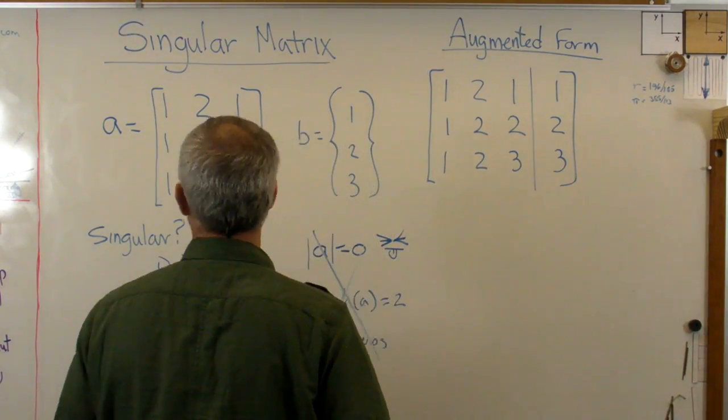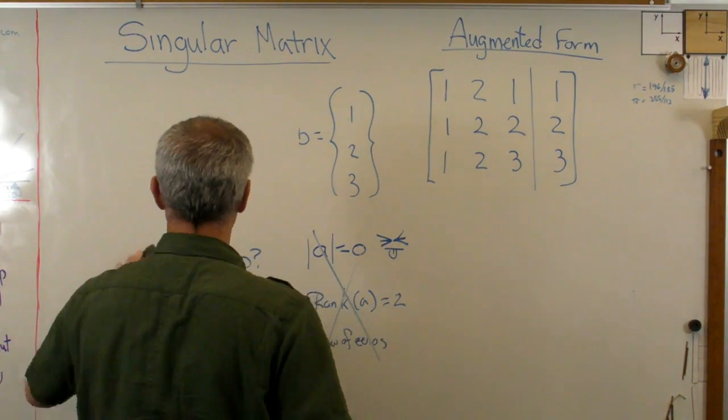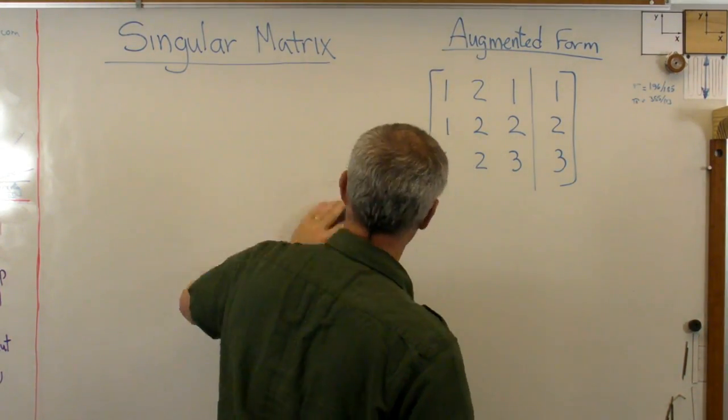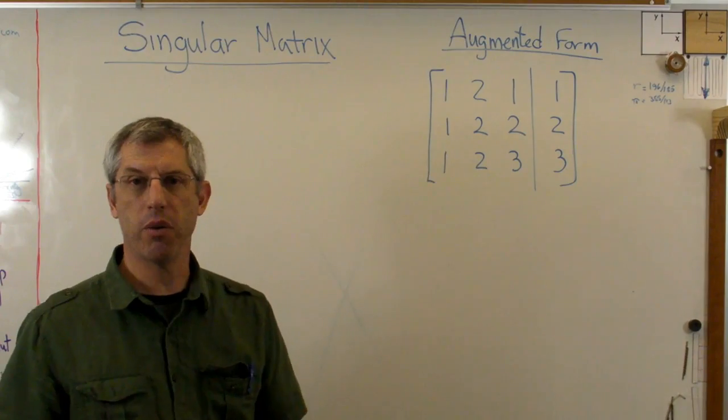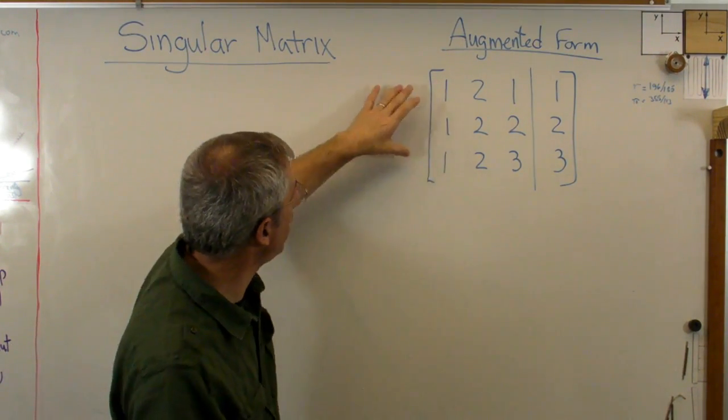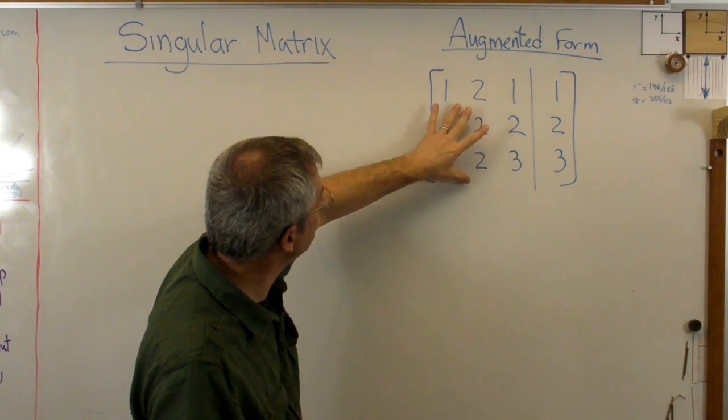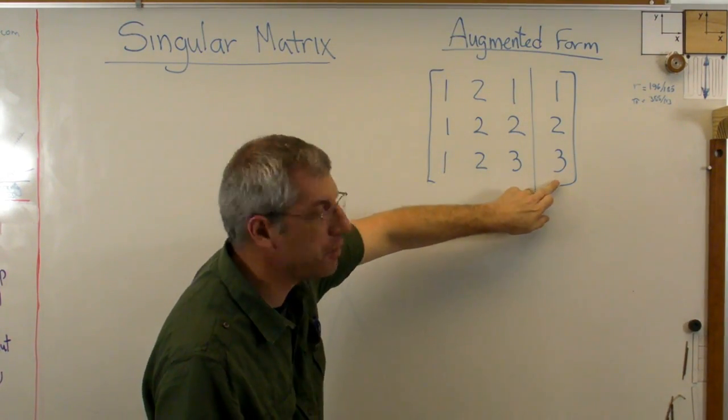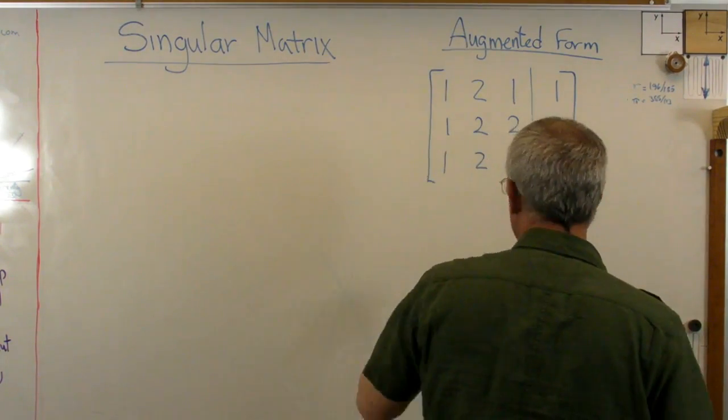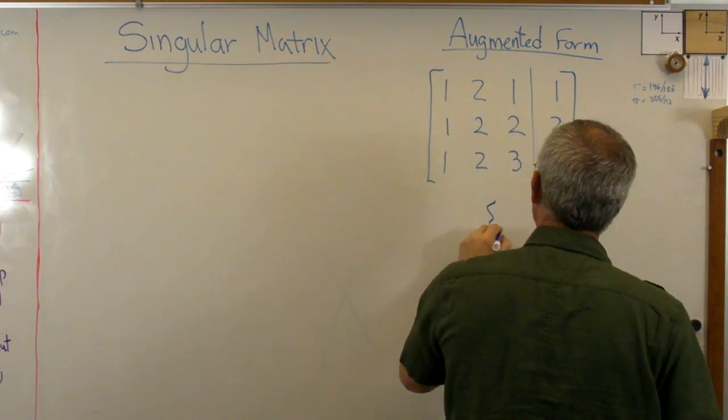And just to show you how this worked out, let me erase some of this stuff here, and I'll show you how it worked out when I did the row operations. When you do row operations, you're basically adding and subtracting rows from each other, multiplying rows by constants, things like that. I think I have another video on that. And you typically will do this in what's called augmented form. There's A right there, and there's B right there. We've got a little line between them showing how that works out. So I did some row operations.